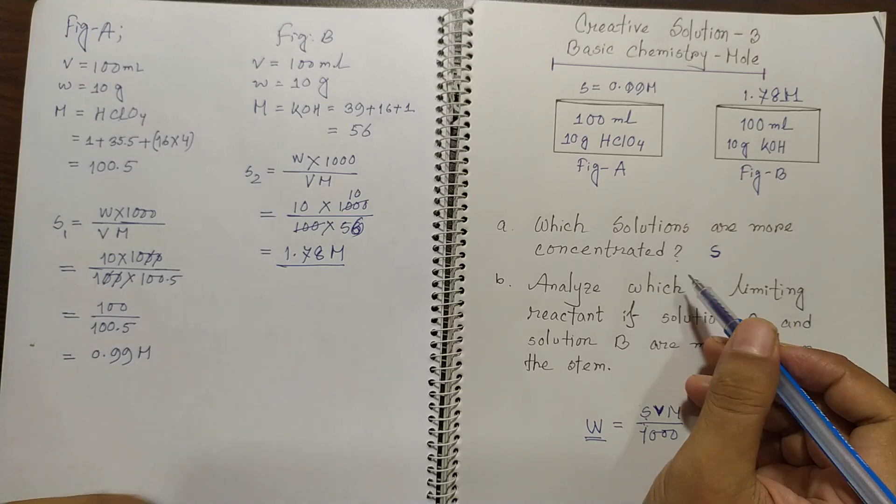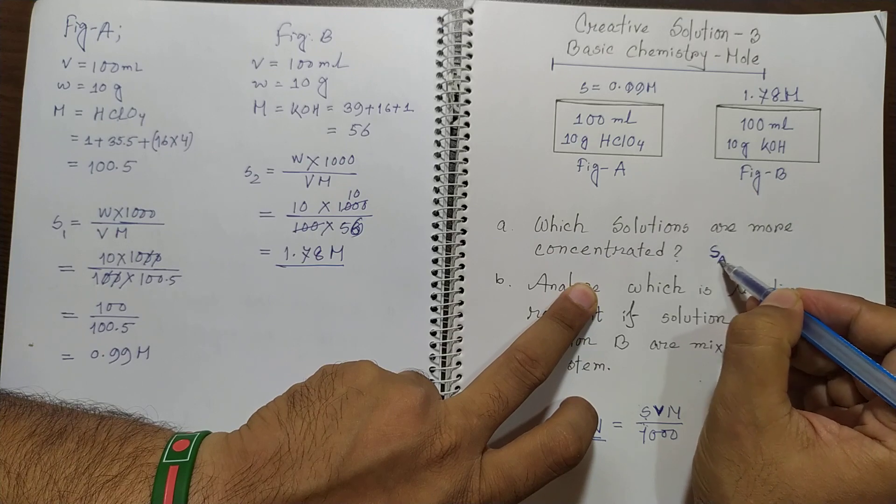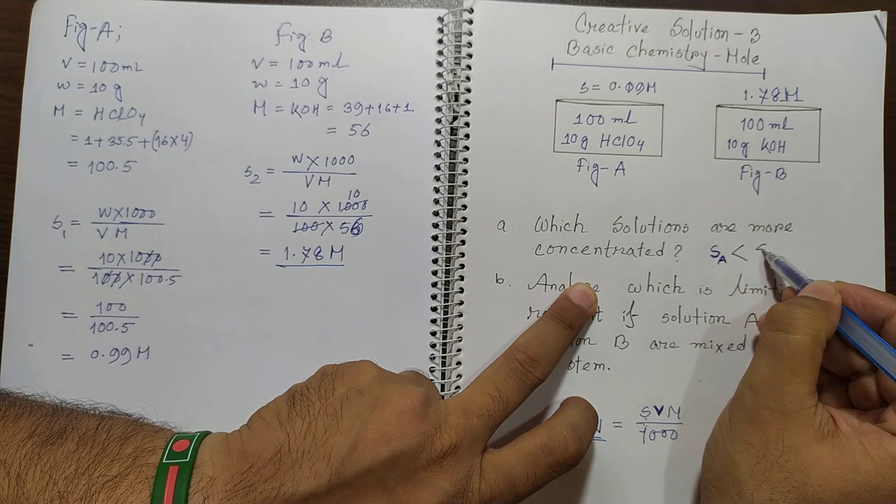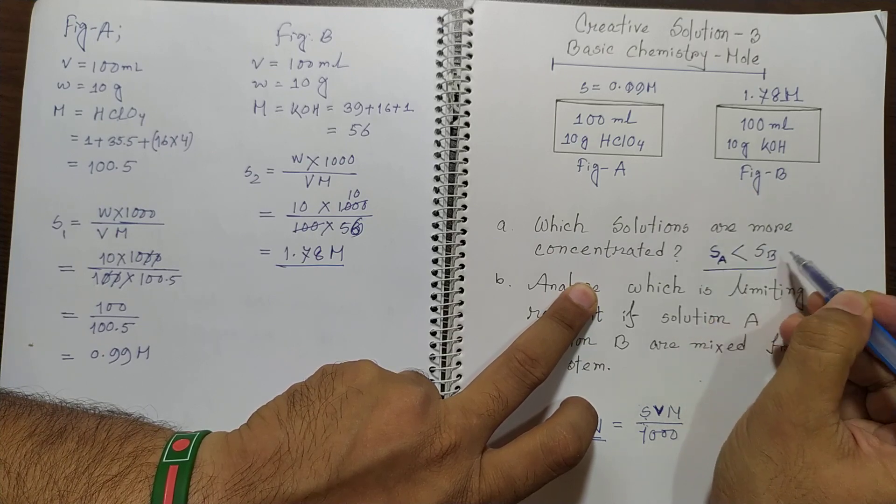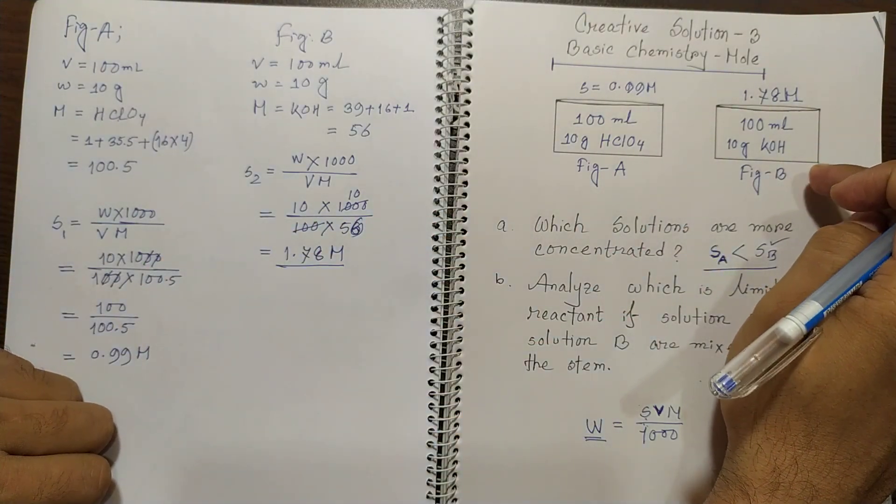So you can say which solutions are more concentrated. The molarity of A is less than molarity of B. So you can say this figure B or these solutions have more concentration.